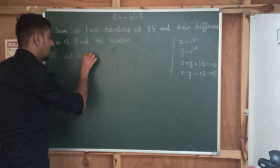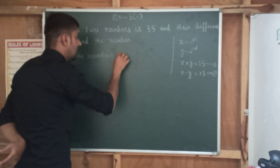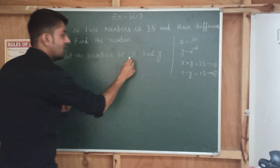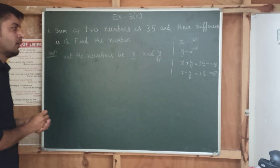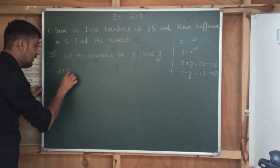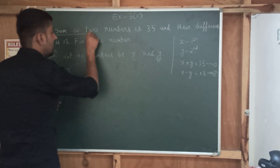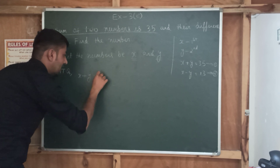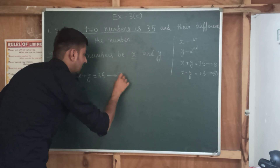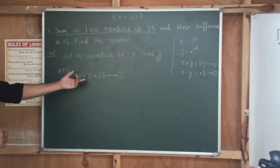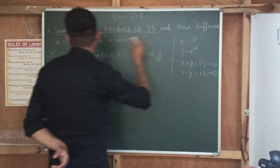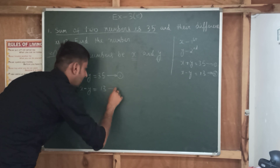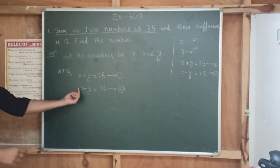Let the numbers be X and Y. Your two numbers are X and Y. According to the question, sum of the two numbers is 35, so X plus Y is equal to 35 — take this as equation number 1. And the difference is 30, so X minus Y is equal to 30 — this is equation number 2. We'll assume that X is greater than Y, so the difference is positive.